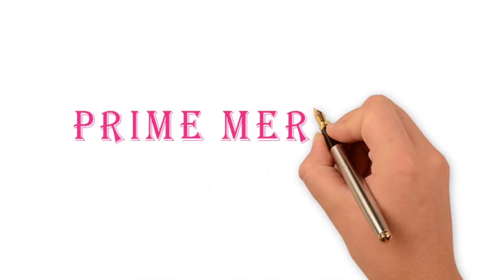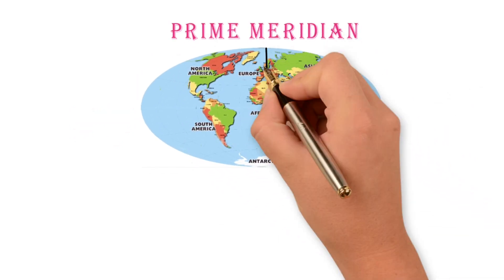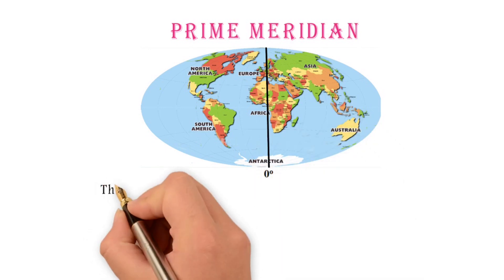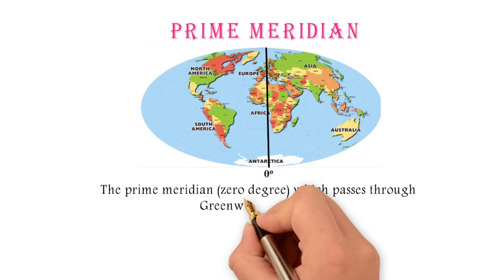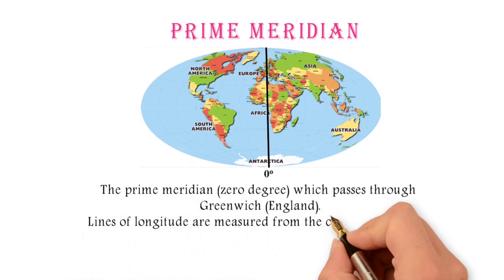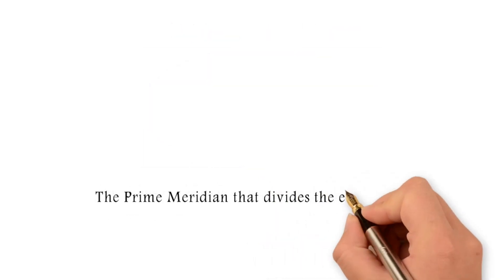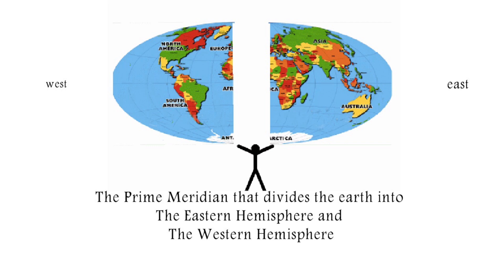The Prime Meridian is at zero degrees and passes through Greenwich, located in England. Lines of longitudes are measured from the center of the Earth. The Prime Meridian divides the Earth into the Eastern Hemisphere and the Western Hemisphere.